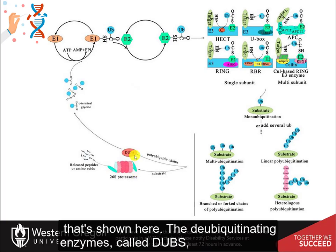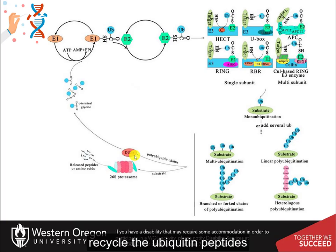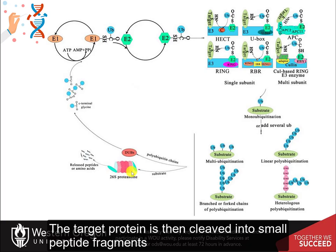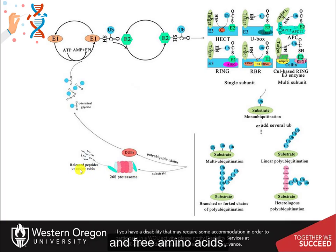The deubiquitinating enzymes, called DUBs, recycle the ubiquitin peptides so that they can be reused in the process by the E1 enzyme. The target protein is then cleaved into small peptide fragments and free amino acids.